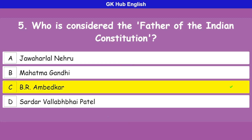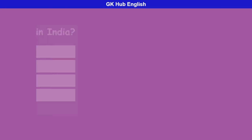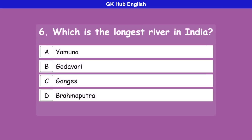Question 6: Which is the longest river in India? Option A is Yamuna, option B is Godavari, option C is Ganges, option D is Brahmaputra. Correct answer is Ganges.